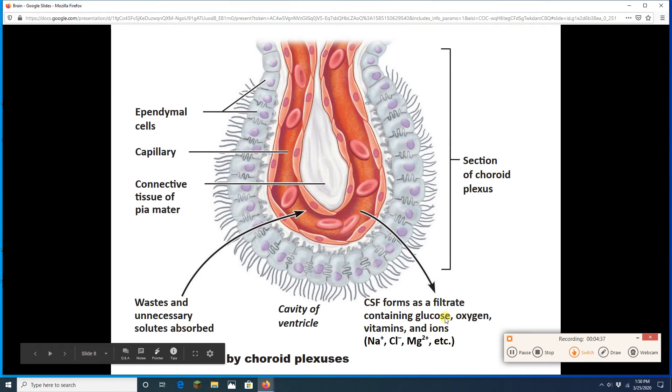Here we're zooming in on a choroid plexus. So here's a choroid plexus. Fluid from blood. It's going to go from the inside of this capillary here, out into the cavity of the ventricle, where the white space is going to be. And it's going to have glucose, oxygen, vitamins, ions, the usual suspects.